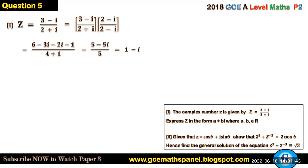Part two: Given that z = cos θ + i sin θ, show that z³ + z⁻³ = 2 cos 3θ.